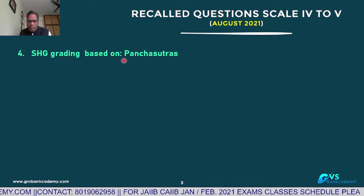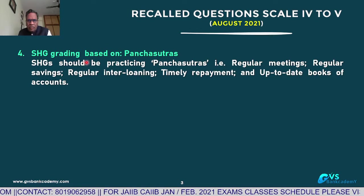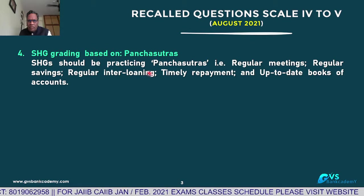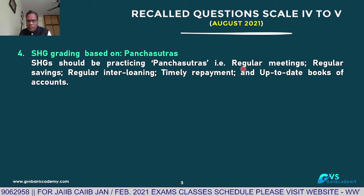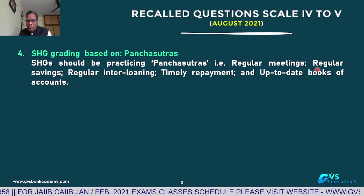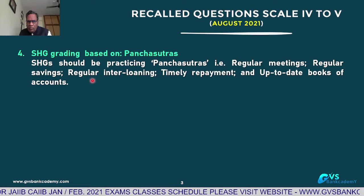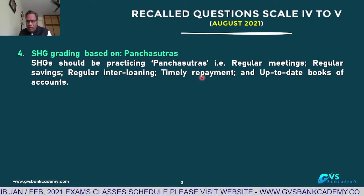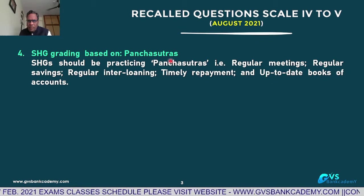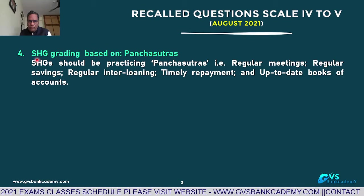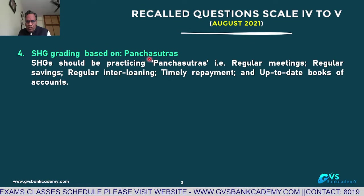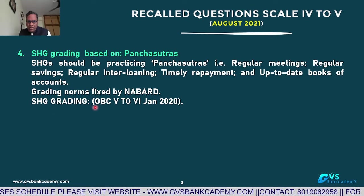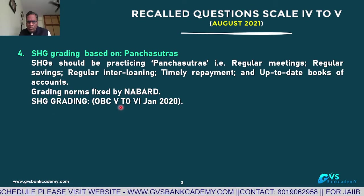Q4: SHG grading — at the time of giving loans to SHGs, these SHGs are graded on Pancasutras. The five principles are: Regular Meeting, Regular Saving, Regular Inter-loaning among members, Timely Repayment of loans to members and the bank, and Up-to-date maintenance of books. These are the five basic Pancasutras fixed by NABARD. The same question was also asked in the 2020 OPC examination scale 5 to 6.